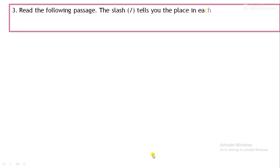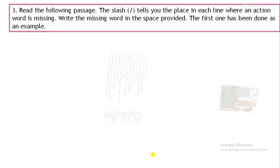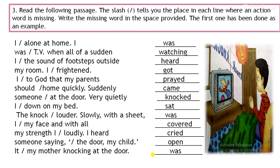Read the following passage and put a slash where you find there is a mistake or missing word. The first one has been done for you. Here again, we will use action words and the proper form of the verb. 'I dash alone at home' — it is in past tense, so we will use 'was', not 'is'. In present, we use 'is'; in past, we use 'was' or 'were'.